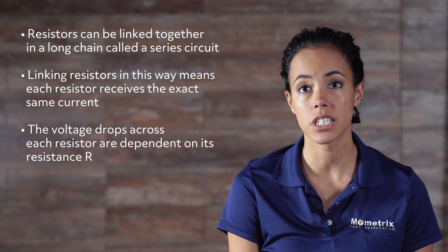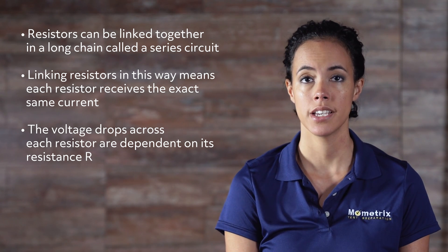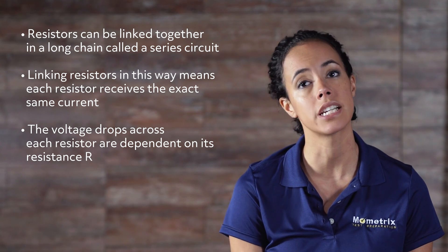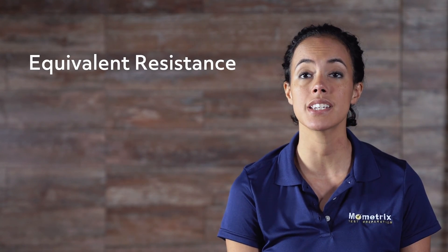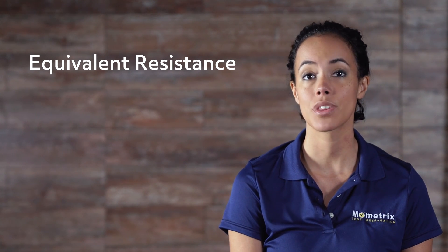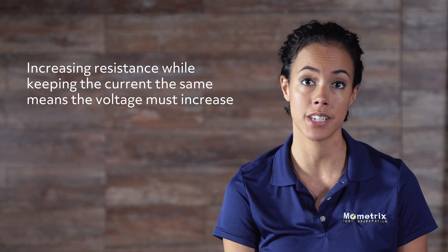Resistors can be linked together in a long chain. This is called a series circuit. Linking resistors in this way means each resistor receives the exact same current. However, the voltage drops across each resistor are dependent on its resistance, R. Suppose we have three resistors in a row, R1, R2, and R3. We would like to replace these three resistors with only one resistor that has the same resistance as the original series. This is called an equivalent resistance. Since the current is the same in each resistor, the relationship is additive: R1 plus R2 plus R3 equals R-equivalent. It's like connecting two garden hoses together — the hoses are in series and it takes more water pressure to push the water through. Similarly, it takes more voltage to push the current through many resistors in series.